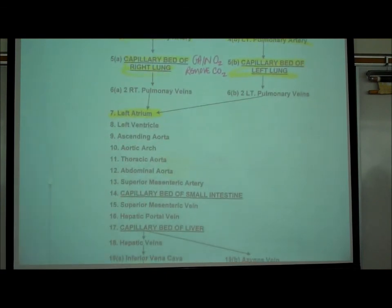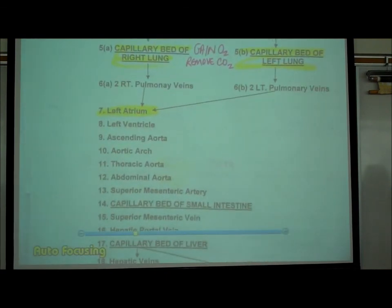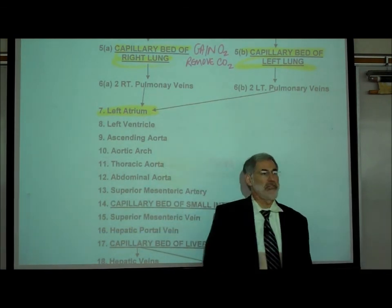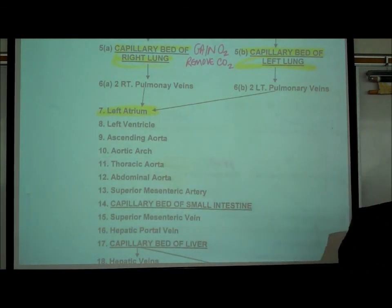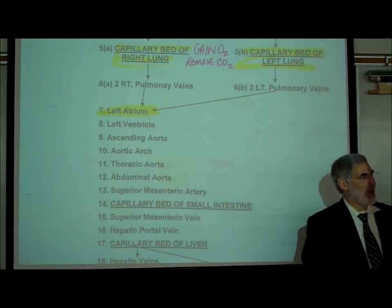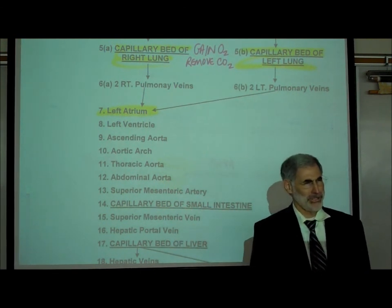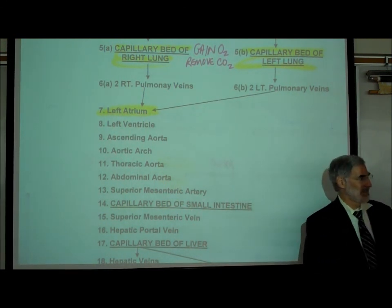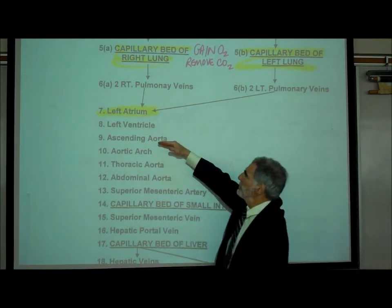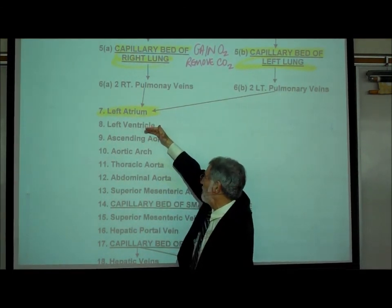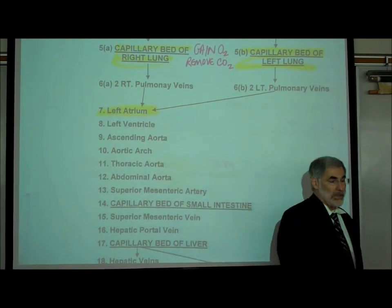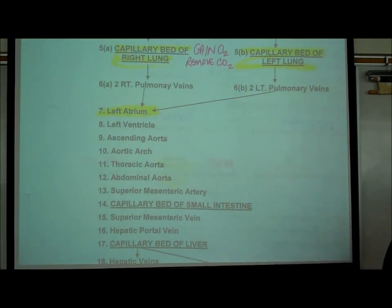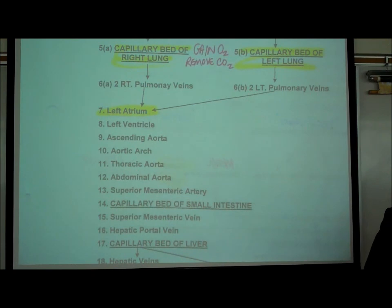Now we've made it to the left atrium and the left pump. Blood goes from the left atrium into the left ventricle. The goal is to force understanding of how blood flows through the body. The left ventricle ejects oxygenated blood out into the aorta — the largest blood vessel in the entire body.